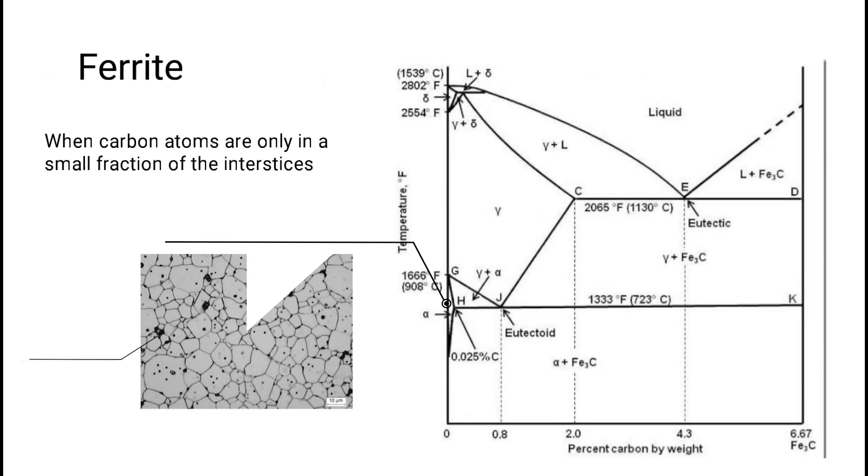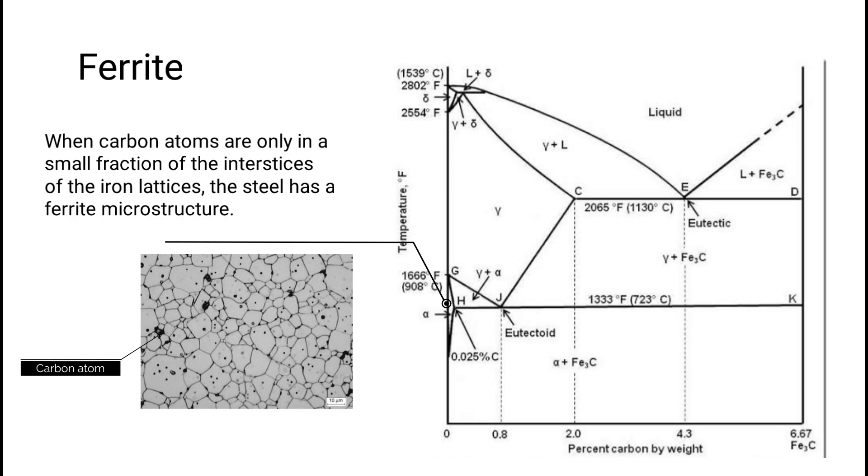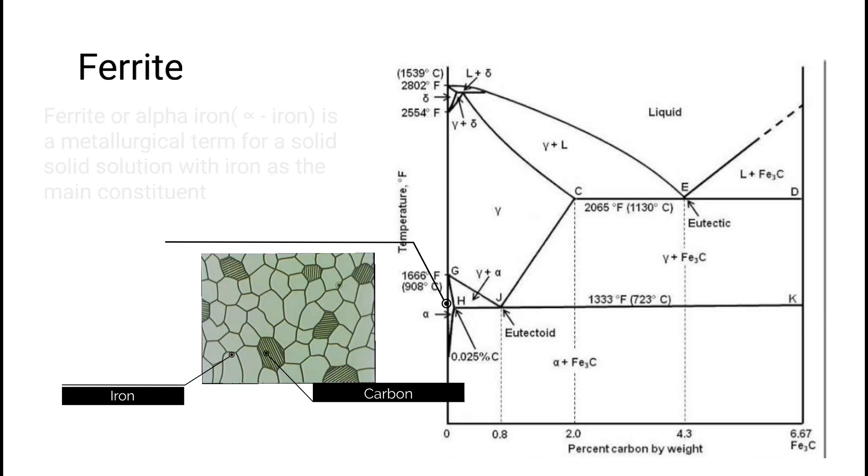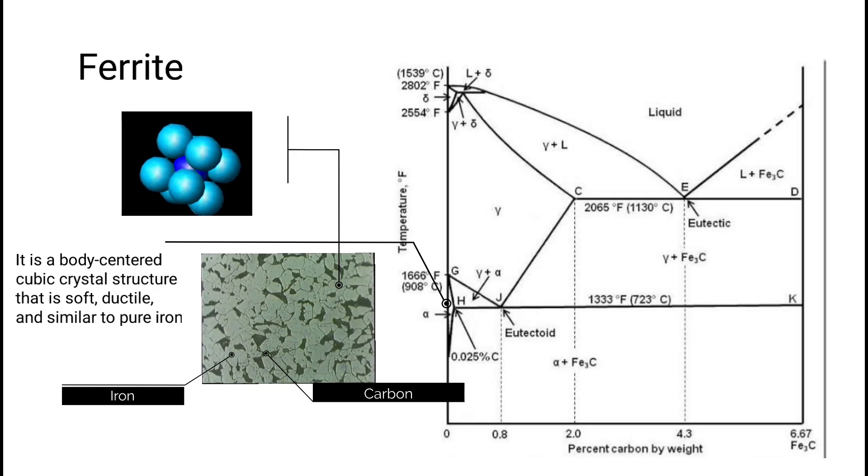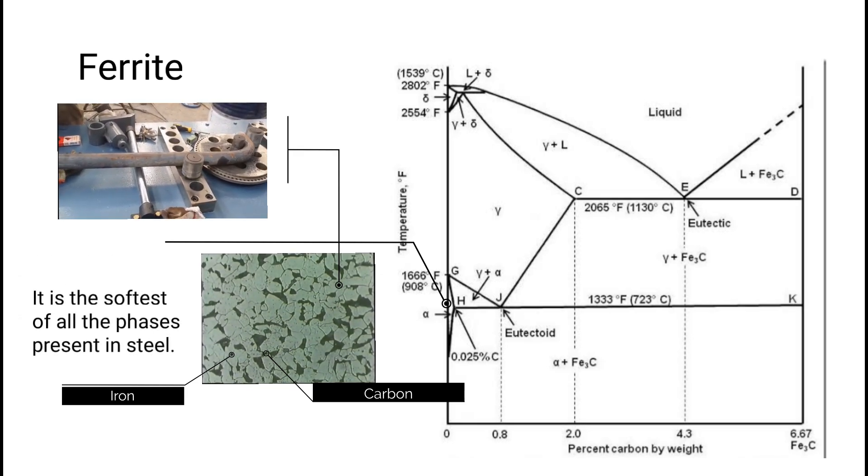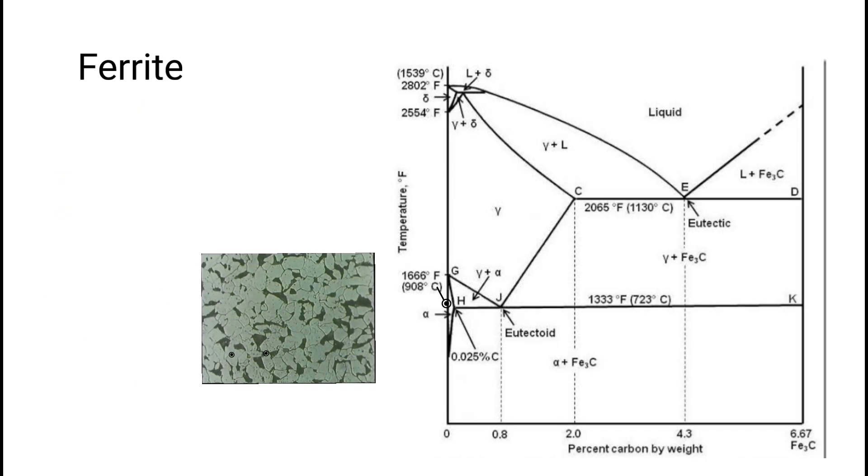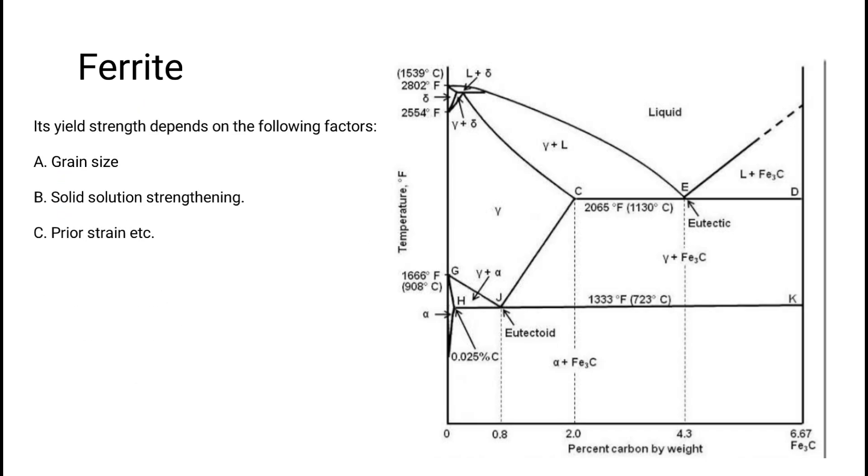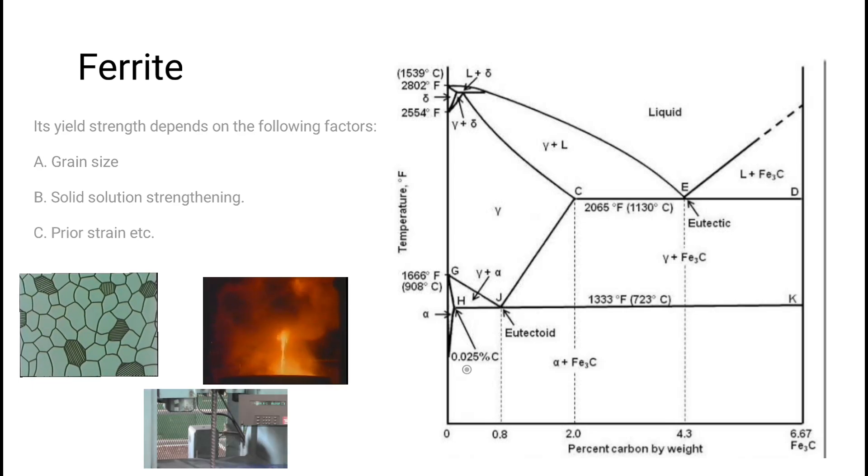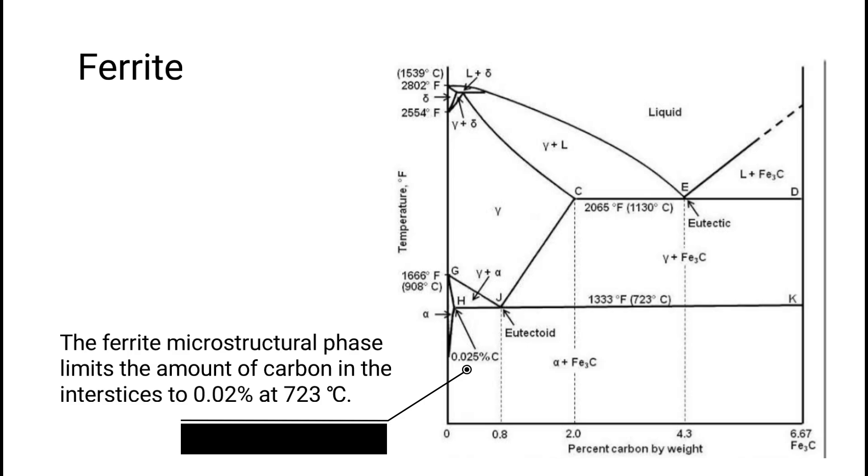Ferrite: When carbon atoms are only in a small fraction of the interstices of the iron lattices, the steel has a ferrite microstructure. Ferrite, or alpha iron, is a metallurgical term for a solid solution with iron as the main constituent. It is a body-centered cubic crystal structure that is soft, ductile, and similar to pure iron. It is the softest of all the phases present in steel. Its yield strength depends on factors including grain size, solid solution strengthening, and prior strain.